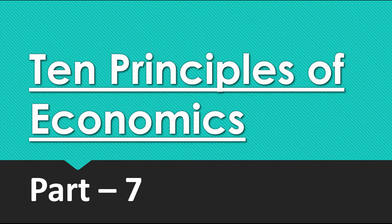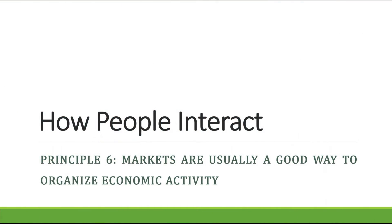Hello students, today we are going to start with Part 7 of 10 Principles of Economics: how people interact. Principle number 6 is that markets are usually a good way to organize economic activity.